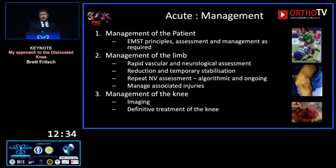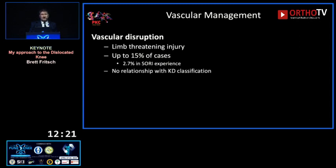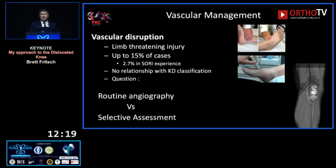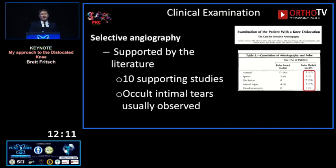This can be a limb-threatening injury. The literature reports up to a 15% rate of vascular injury; in our experience it was much lower — about 3% — with no relationship to KD classification. You can use clinical assessment, Doppler ABIs, CT angiogram, or formal angiogram. There's a raging debate about how aggressive to be, but our approach has always been selective angiography, supported by the literature.